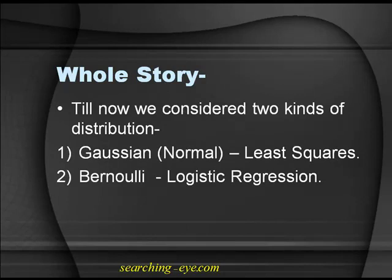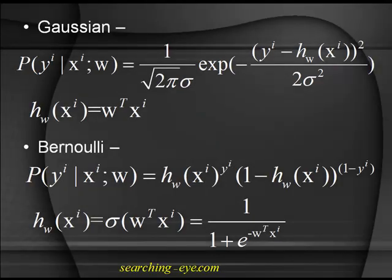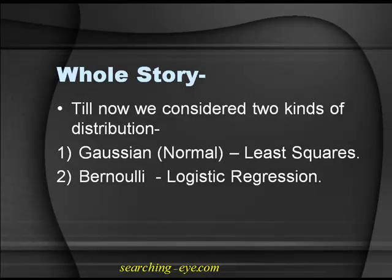So this is the whole story. Till now we have considered two kinds of distributions. There is normal distribution in the case of least squares and Bernoulli distribution in the case of logistic regression. The Bernoulli distribution is: probability of y given x_i, parameterized by w, equals h_w(x_i) to the power y_i times 1 minus h(x_i) to the power 1 minus y_i.